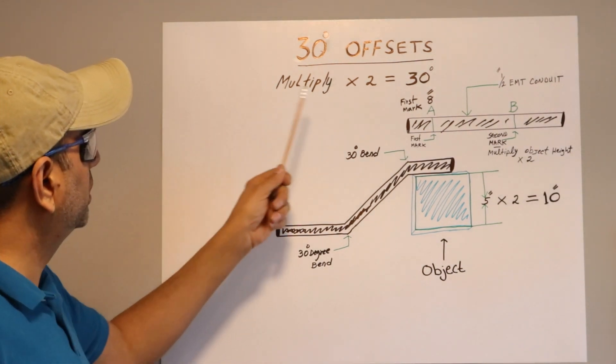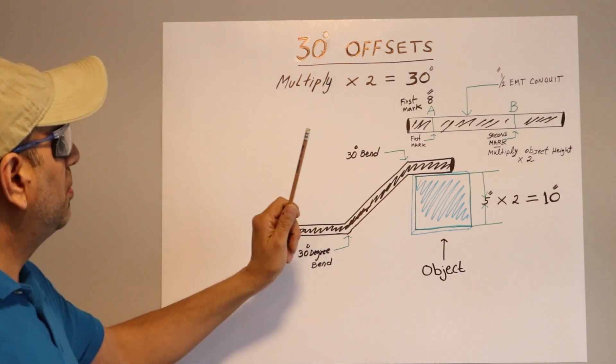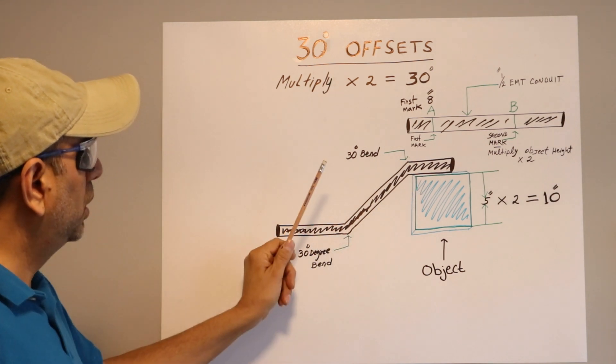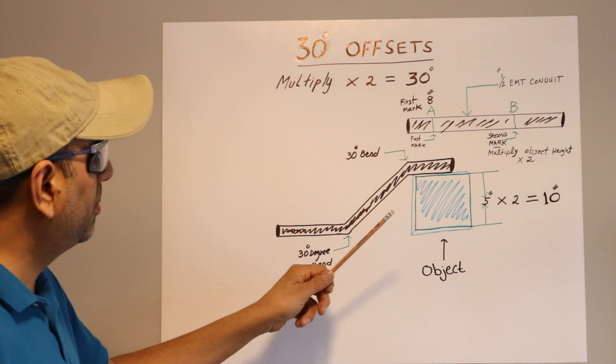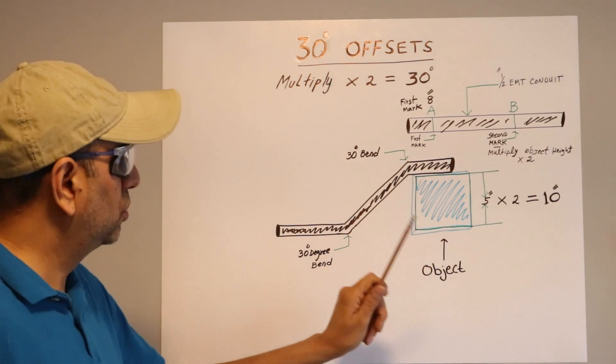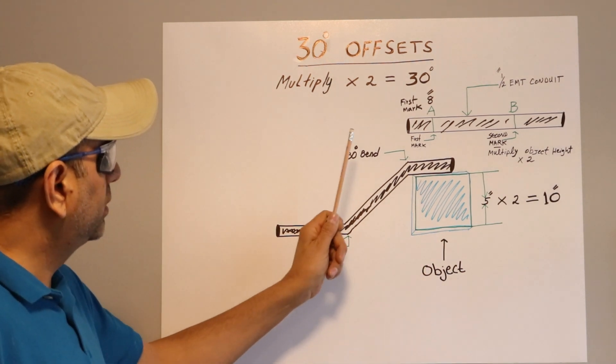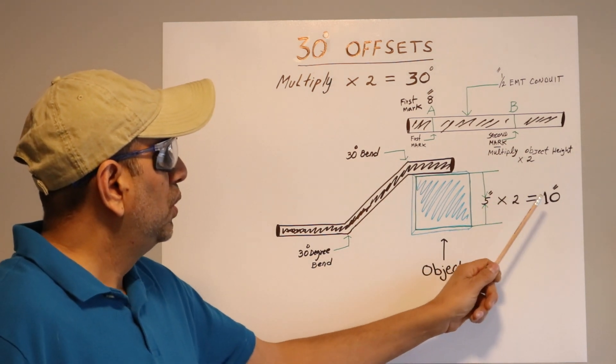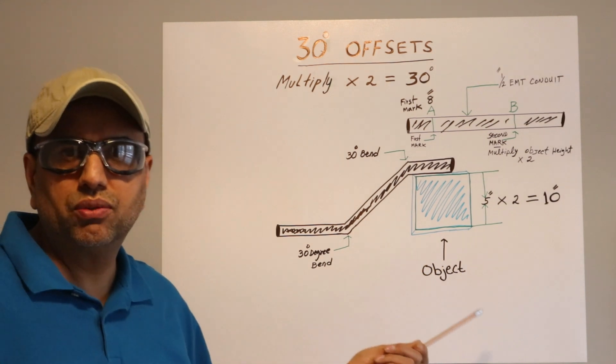You only have to multiply by two. Let's say we have an obstacle that we want to go on top and do our 30-degree bend. Let's say that obstacle height is five inches. When it's five inches, that means we're doing a 30-degree bend. Five inches multiplied by two equals ten.